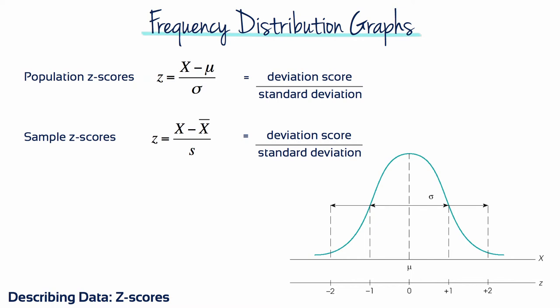Although z-scores are most commonly used in the context of a population, the same principles can be used to identify individual locations within a sample, provided that you use the sample mean and the sample standard deviation.